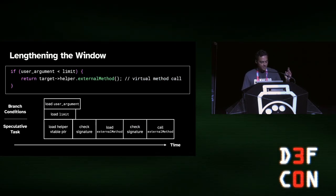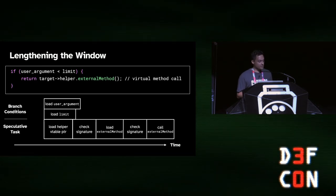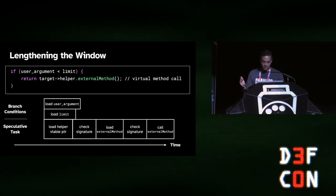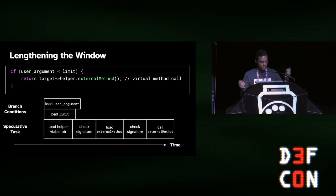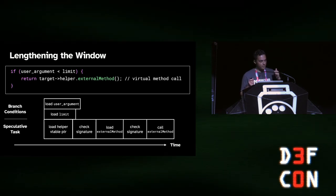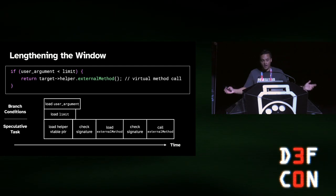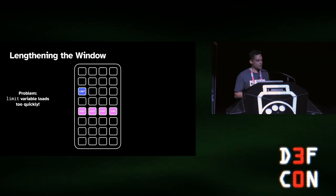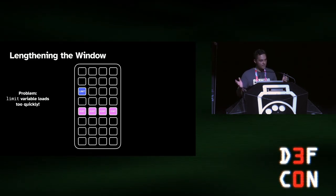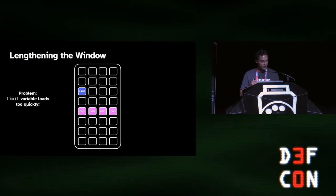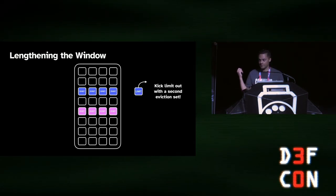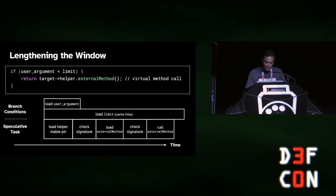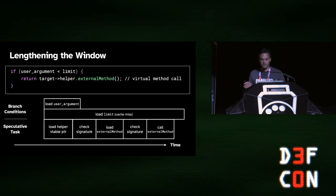Another challenge: the speculation window is very short. We have to do a load, check, another load, another check, and a call — all before the CPU realizes it's not supposed to be running that. The CPU only needs to do two loads and a comparison to resolve. So we want the limit variable to take longer to load, giving us more time. We use kernel eviction sets to kick the limit variable all the way back to DRAM — this requires the limit and the eviction set to be in different cache sets. When you do that, the load takes much longer, giving plenty of time in that window to do the tests and forge.